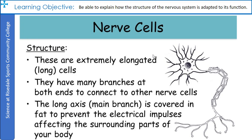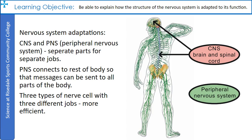You should remember from the C1 topic where we looked at specialized cells some features of nerve cells. They're extremely long cells. They have many branches at both ends so they can connect to other nerve cells and make many connections. The long axis — the main branch — is covered in fat to prevent the electrical impulses leaving the nerve cells; it's called the myelin sheath. The central nervous system and the peripheral nervous system are adapted as well — they have separate parts for separate jobs. The CNS handles coordination, whereas the peripheral nervous system gathers information and transfers the message back to the effectors.